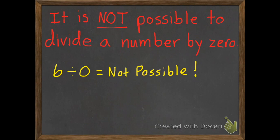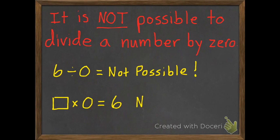If you still don't believe me, let's check our work with multiplication. So what times 0 equals 6? Well, nothing times 0 can equal 6, because anything times 0 is going to be 0. So it's not possible. It is not possible to divide a number by 0.